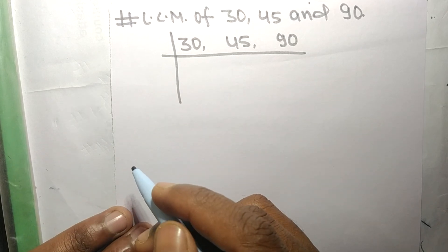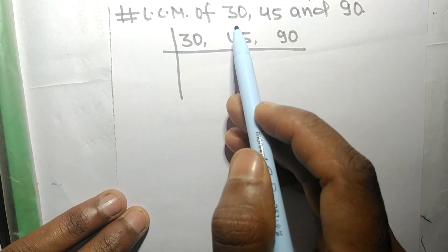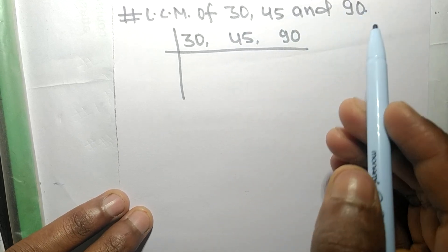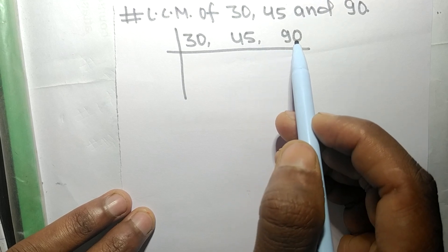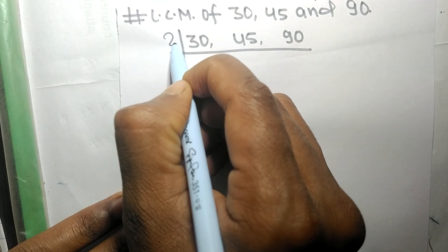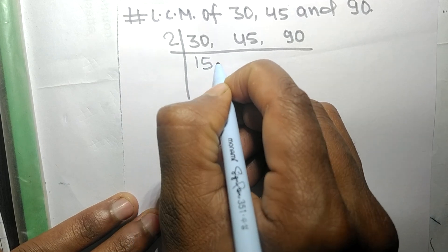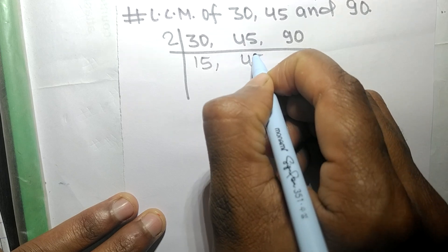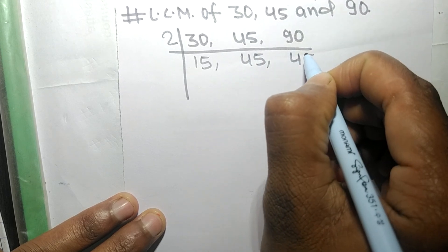Today in this video we shall find the LCM of 30, 45, and 90. 30 and 90 are exactly divisible by 2, so 2 times 15 equals 30. 45 is not divisible by 2, so it remains the same. 2 times 45 equals 90.